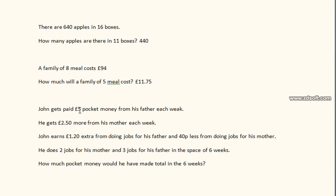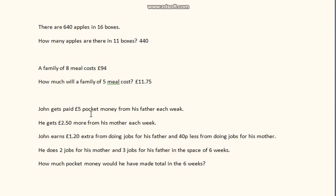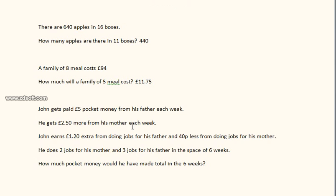So we times those by 6. £5 times 6 is £30 — that's £30 in 6 weeks. Then £7.50 times 6 would be £45. So now we've got £30 and £45. So far our running total is £75.